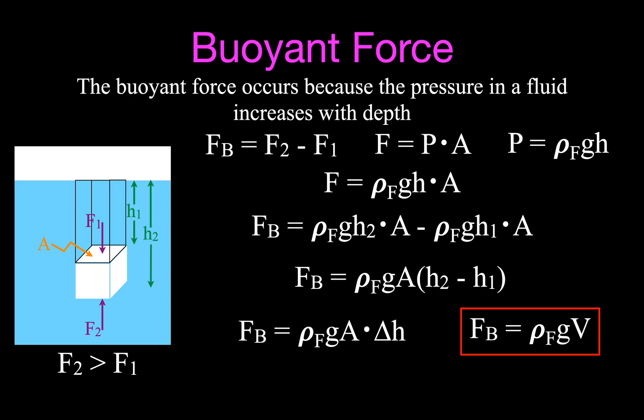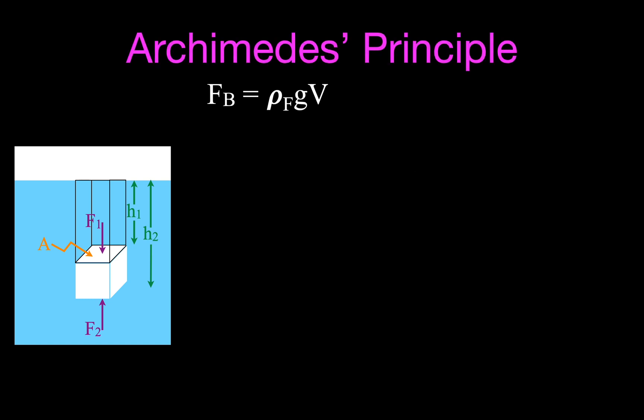Now we can take that a step further and talk about Archimedes' principle. The buoyant force equals density of fluid times g times volume of the object. If the object is fully submerged, then the volume of water displaced equals the volume of the object. We can rewrite the equation as: buoyant force equals density of fluid times g times volume of fluid displaced. Density is mass divided by volume, so density times volume equals mass.